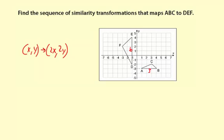If we dilate A, which is (1, -3), to (2x, 2y), we just multiply each coordinate by 2. So 1 would become 2, and negative 3 would become negative 6.